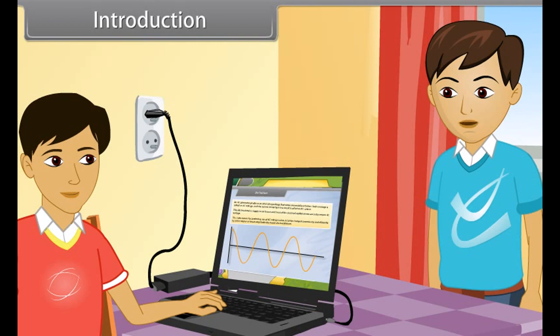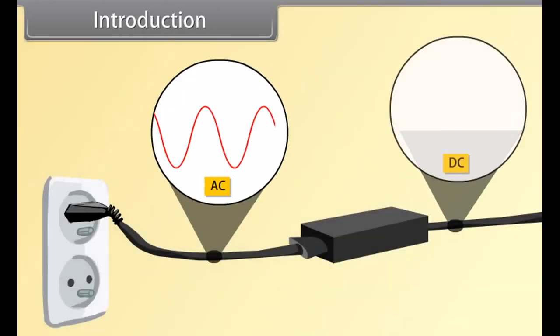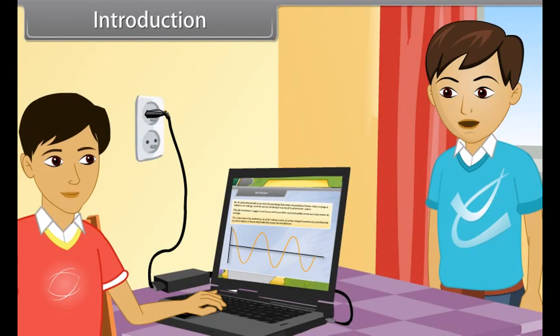Let me tell you that laptops and many appliances also work on D.C. voltage. When the charger is plugged into the A.C. supply, the charger converts the A.C. voltage into D.C. voltage so that the appliances can work smoothly.